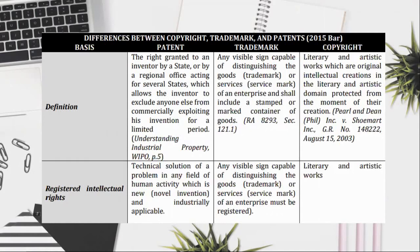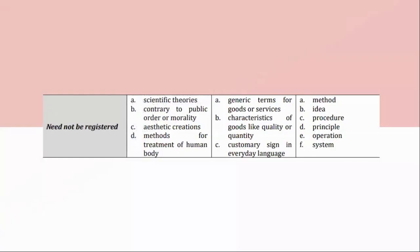Registered Intellectual Rights. Patent requires a technical solution of a problem in any field of human activity which is new, novel invention, and industrially applicable. Trademark — any visible sign capable of distinguishing the goods or services of an enterprise must be registered. Literary and artistic works need not be registered. Non-patentable subjects include: (A) Scientific Theories, (B) Contrary to Public Order or Morality, (C) Aesthetic Creations, (D) Methods for Treatment of Human Body. Non-registrable trademarks include: (A) Generic Terms for Goods or Services, (B) Characteristics of Goods like Quality or Quantity, (C) Customary Sign in Everyday Language. Non-copyrightable subjects include: (A) Method, (B) Ideas, (C) Procedure, (D) Principle, (E) Operation, (F) System.